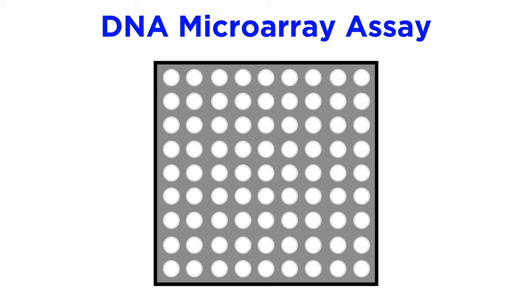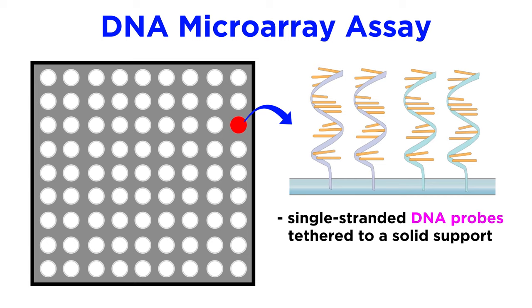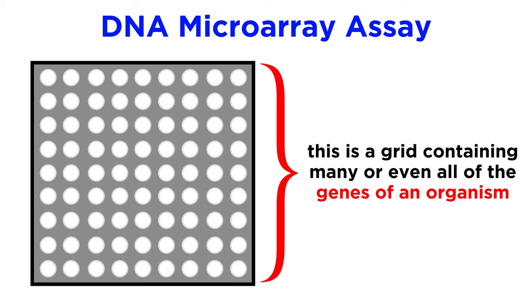This is a powerful technique involving a huge grid of tiny spots, and in each well sits many copies of a single-stranded DNA fragment called a probe attached to a solid surface, which each represent a particular gene. So we can think of this as a grid of many different genes of an organism, or even all of them ideally.